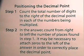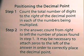In order to multiply decimals, we will now examine positioning the decimal point. When you are multiplying decimals, step one: count the total number of digits to the right of the decimal point in each of the numbers being multiplied. Step two: in the answer, count from right to left the number of places found in step one. It may be necessary to attach zeros to the left of the answer in order to correctly place the decimal point.